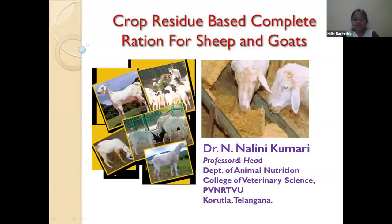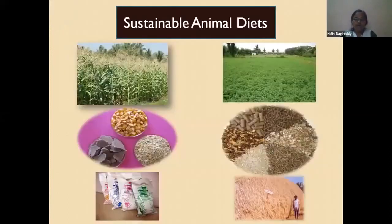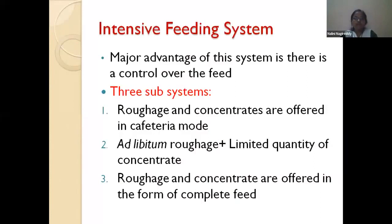In an intensive feeding system, the farmer has control over the feeding system, and there is flexibility. That means if you want to include any new feed resources into the feeding system, you can gradually introduce them. When it comes to the three subsystems of the intensive feeding system, one type is the cafeteria mode.